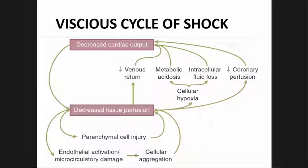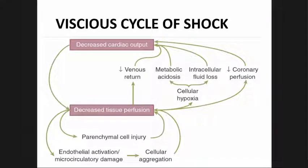The vicious cycle of shock: microcirculatory dysfunction, parenchymal tissue damage, and inflammatory cell activation can perpetuate hypoperfusion. Ischemia-reperfusion injury will often exacerbate the initial insult. These effects at the cellular level, if untreated, will lead to compromise of organ function, thus creating a vicious cycle. Regardless of etiology, decreased tissue perfusion in shock results in a feedforward loop that can exacerbate cellular injury and tissue dysfunction.